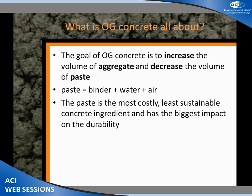Paste — that is binder, that is water, that is air. The paste happens to be the most costly, the least sustainable, and the component in our concrete that has the biggest impact on durability. If we can minimize paste, we are going to be doing lots of good things for our concrete mixtures.